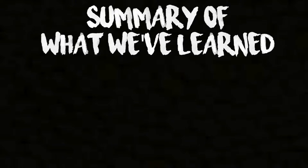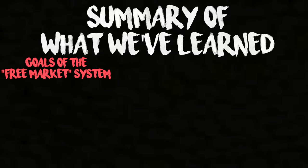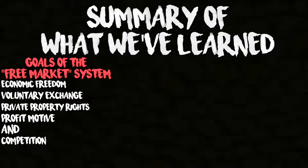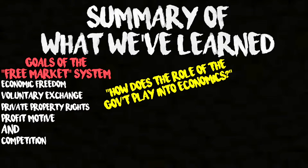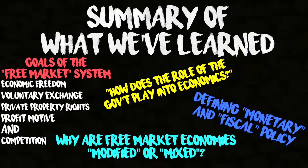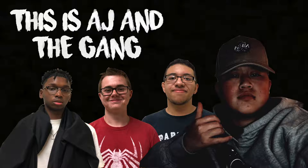And that's all you need to know. The goals of the free market system are economic freedom, voluntary exchange, private property rights, profit motive, and competition. We also covered how the role of the government plays into economics, defining monetary and physical policy, and why free market economies are modified or mixed. This is AJ and the gang, signing off.